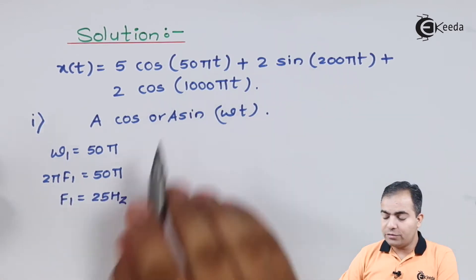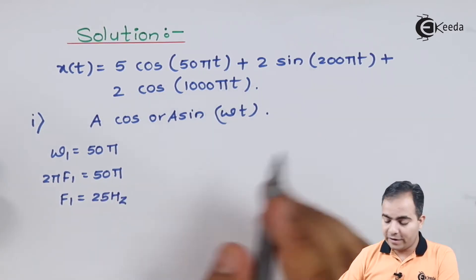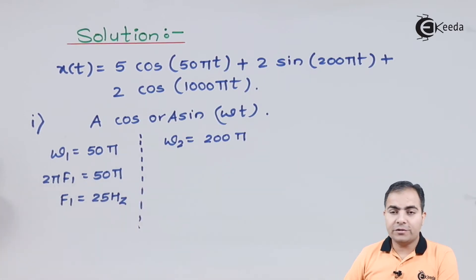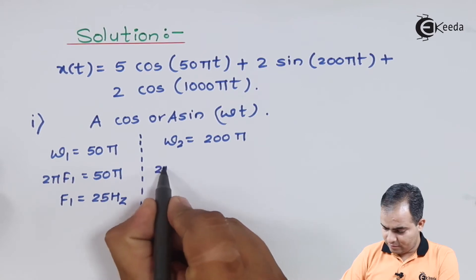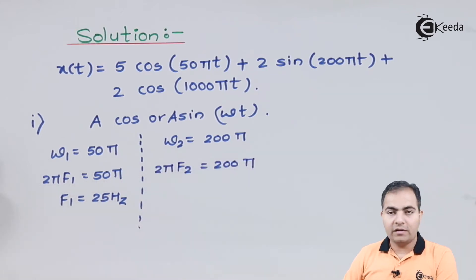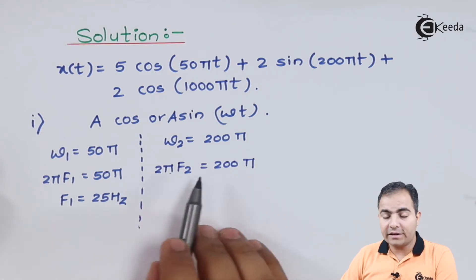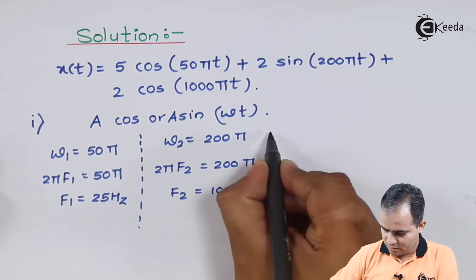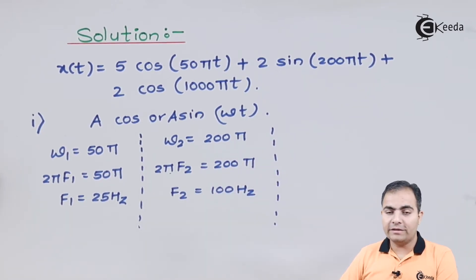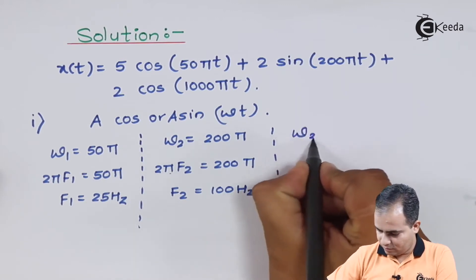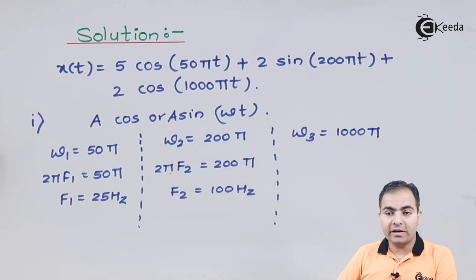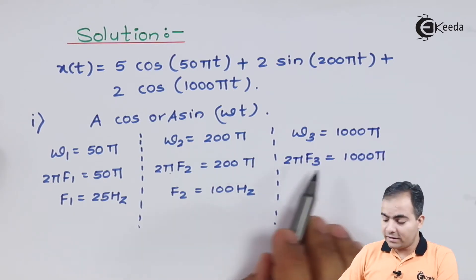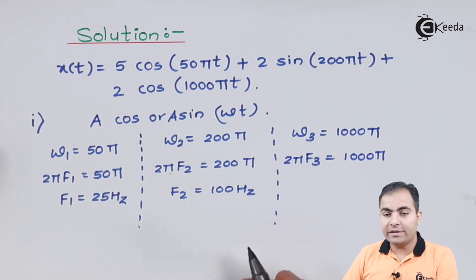Similarly, ω₂ = 200π. Substituting into 2πf₂, the pi's cancel and 200/2 = 100, so f₂ = 100 Hz. For the third term, ω₃ = 1000π. Substituting into 2πf₃, the pi's cancel and 1000/2 = 500, giving f₃ = 500 Hz.